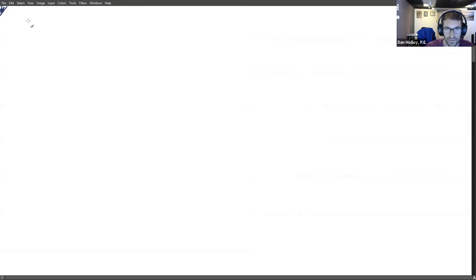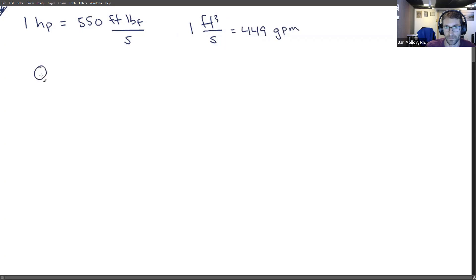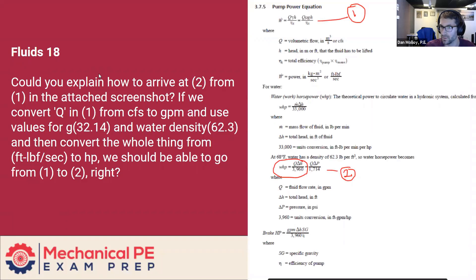So a couple of conversion factors that we'll need as we go here. One horsepower is 550 foot pound force per second. We'll need that. And we'll also need one cubic foot per second is 449 GPM. So let's write down our two equations. That first equation, we have the work done by a pump is Q gamma H over efficiency.